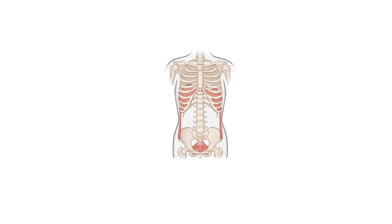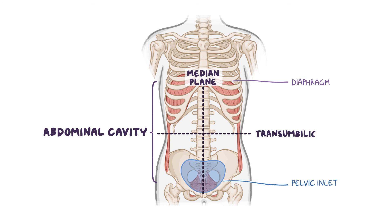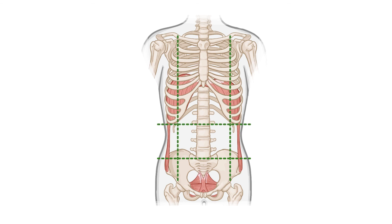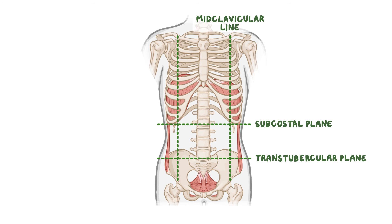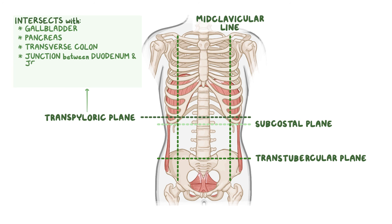As a quick recap: the abdominal cavity's superior border is the diaphragm and its inferior border is the pelvic inlet, and it can be divided into four major quadrants via the vertical median plane and a horizontal transumbilical plane. The abdominal cavity can also be divided into nine regions via right and left midclavicular lines and the subcostal and trans-tubercular planes. Remember that instead of the subcostal plane, sometimes the trans-pyloric plane is used to define the upper portion of the abdomen because it intersects many important structures, such as the gallbladder, pancreas, transverse colon, the junction between the duodenum and jejunum, as well as the superior mesenteric artery and hepatic portal vein.